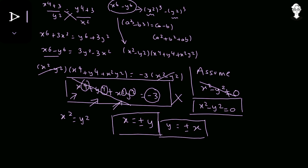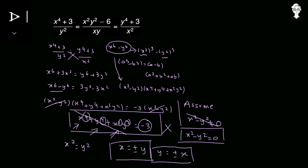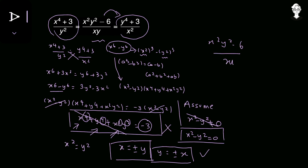Now we utilize this result with the middle expression of the original equation, which we haven't used yet. We equate the middle with the last: x²y² minus 6 upon x y equals y to the power 4 plus 3 upon x squared.